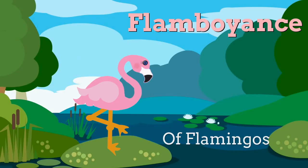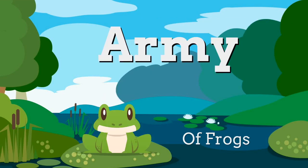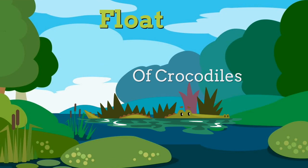A group of flamingos is fittingly called a flamboyance of flamingos — I love it. A group of frogs is called an army. A group of crocodiles is called a float — that makes sense to me, but if I saw them, I might call them a scary float.